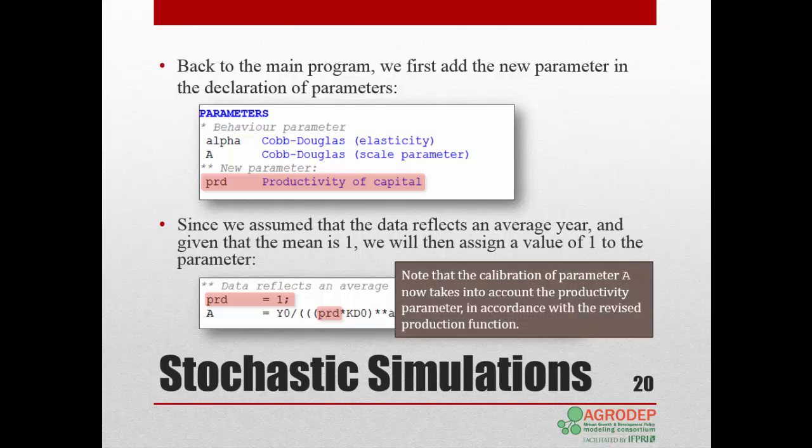Note that in addition, we must recalibrate the scale parameter A, since now it must take into account the productivity factor of capital to reflect the revised production function. At this time, A would have the same value as in the previous lesson, since prd is 1. For all other values, A would of course change also.